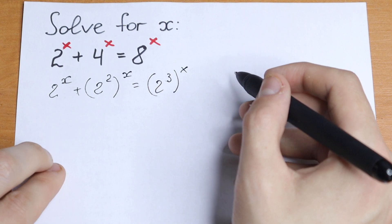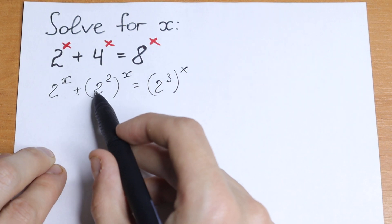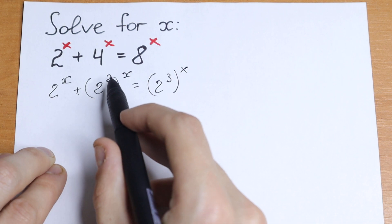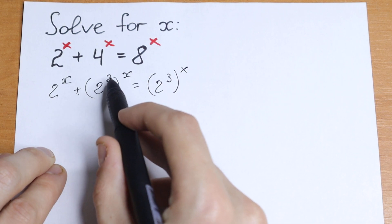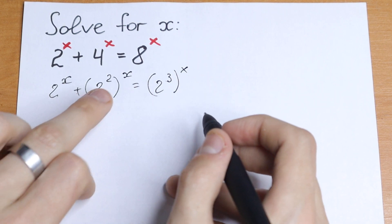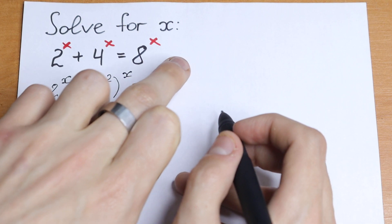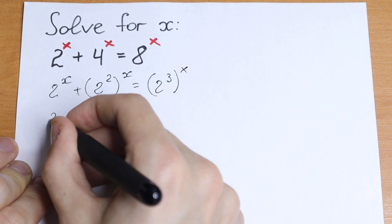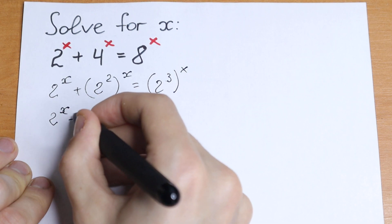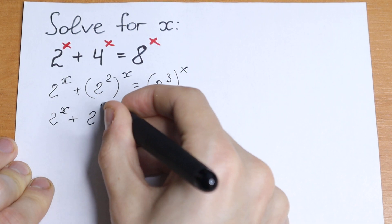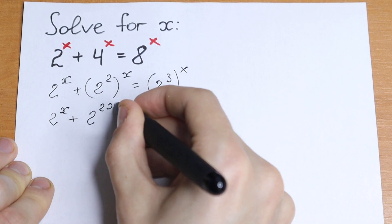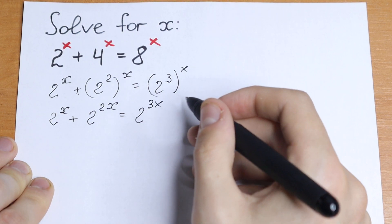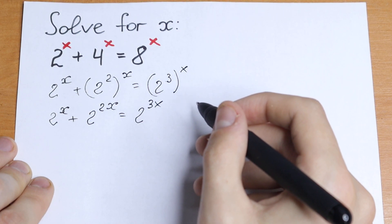So what are we going to do next? If we have a situation like that — if we raise a to the power x, raised to the power b, we need to multiply x times b. So as a result we will have 2x as the power and 3x as the power. We will have 2 to the power x plus 2 to the power 2x equal to 2 to the power 3x.